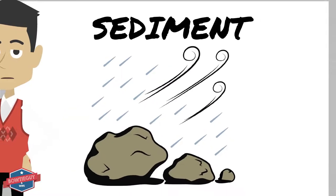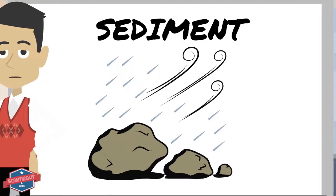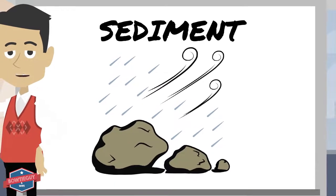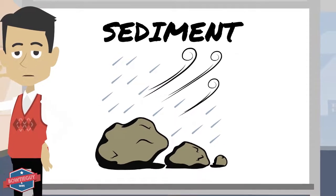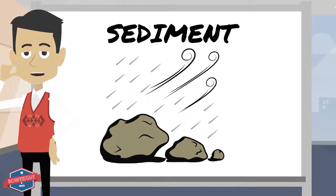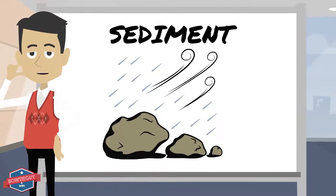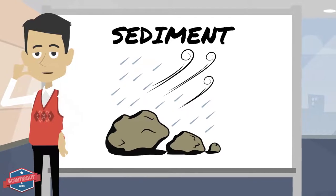Sediments are created from weathering and erosion. Sometimes rocks are weathered into small pieces. Blowing winds, flowing water, gravity, or slow-moving glaciers move the pieces to other places where they are deposited into layers.